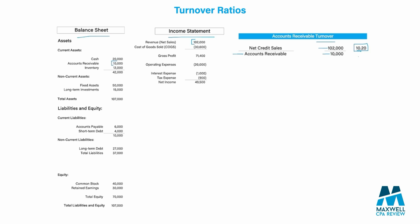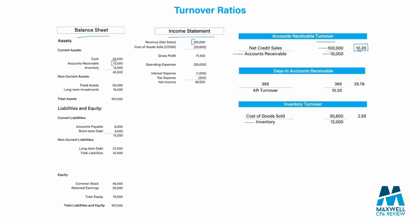We can also express this as how many days it takes to turn over, which is the days in AR ratio. We simply take 365 divided by the AR turnover ratio, which tells us that every 35.78 days we collect our AR balance. You want a higher turnover ratio and fewer days in AR so you're collecting more efficiently.